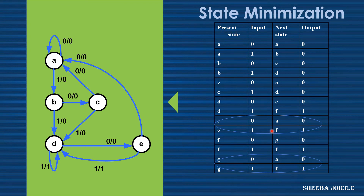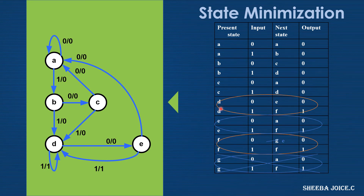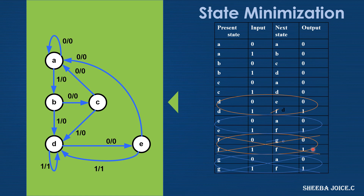Since states E and G are equivalent, we can replace G and write it as E. Now we compare state D and state F. When the present state is D and the input is zero, the next state is E and output is zero — similarly for state F. When the input is one, for both D and F the next state is F and output is one. Therefore, state D and state F are equivalent, so we can eliminate state F and rewrite it as D.